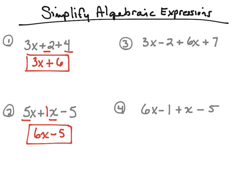Let's try number three. We're simplifying the expression and looking for like terms. There are four different terms here. We can take three x and six x and combine those — they're like terms because both have x's. Three x's plus six x's gives nine x's. Also, negative two and seven are like terms since neither has a variable, so we add them: negative two plus seven gives a positive five. After simplifying, we end up with nine x plus five.